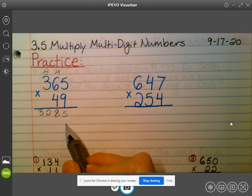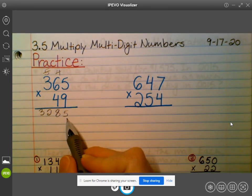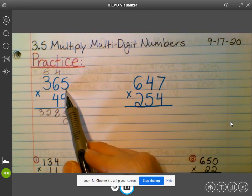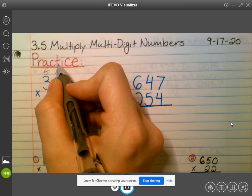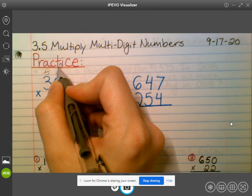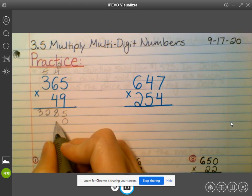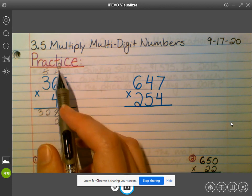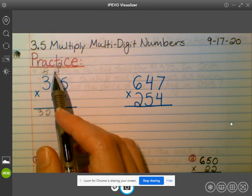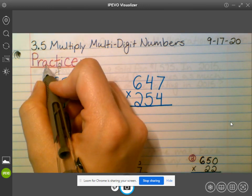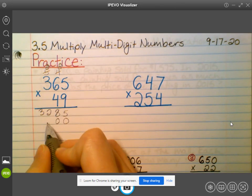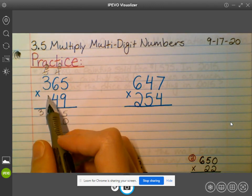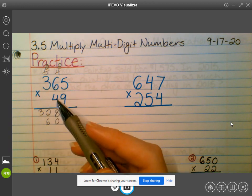Then what do I add before I move on to the four? A placeholder zero. Nice. What's four times five? 20. Carry the two. Bring down the zero. What's four times six? 24 plus the two would be 26. Carry the two, bring down the six. What is four times three? 12. Plus two? 14.